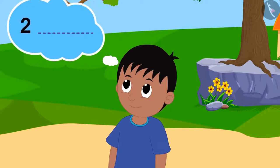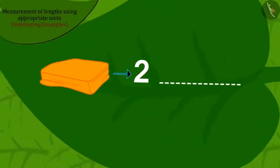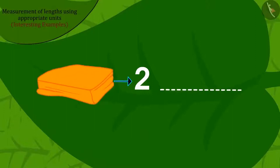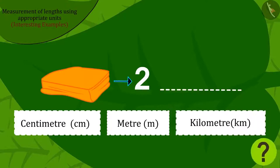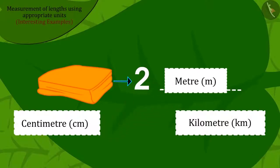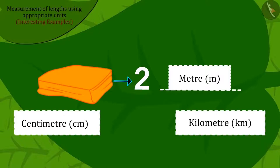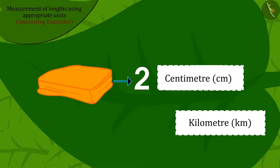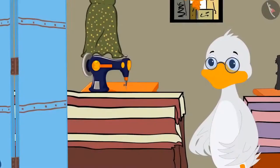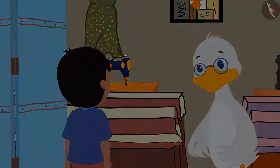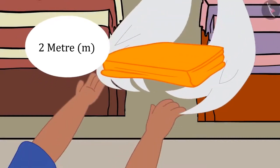Children, can you tell Raju what units should be used to measure the cloth for his father's shirt — centimeters, meters, or kilometers? Raju should use meters for the piece of cloth, because two centimeters would be too short and two kilometers would be too long. Raju immediately reached the shop and bought a two-meter-long cloth for his father.